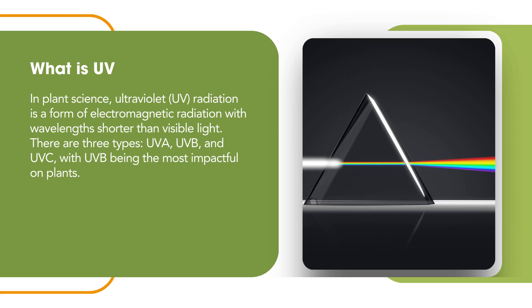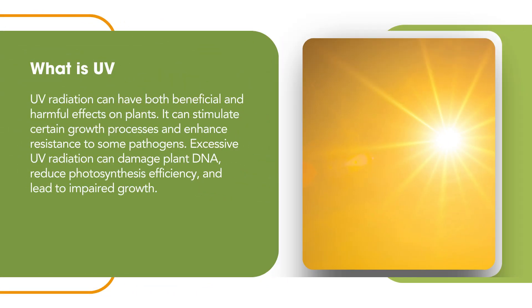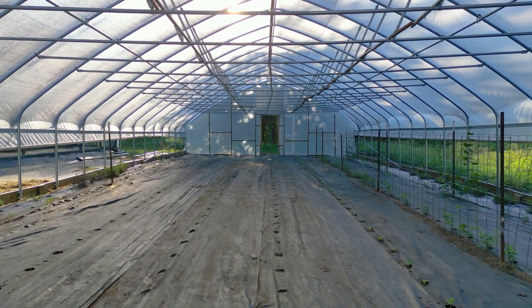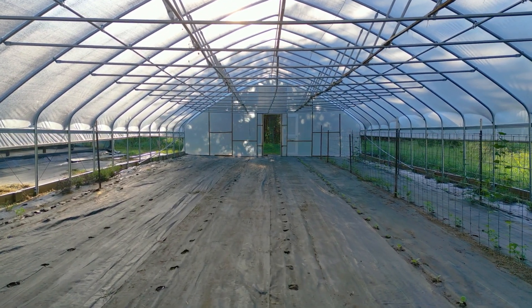Let's start by defining what ultraviolet or UV actually is. In regards to plant science, we are looking at UV radiation as a form of electromagnetic radiation with wavelengths shorter than visible light. There are three types: UVA, UVB, and UVC, with UVB being the most impactful on plants. UV radiation can have both beneficial and harmful effects on plants. It can stimulate certain growth processes and enhance resistance to some pathogens. Excessive UV radiation can damage plant DNA, reducing photosynthesis efficiency and leading to impaired growth.